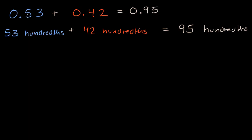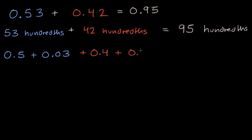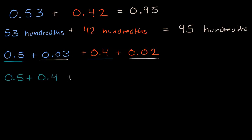Now another way we could have thought about it is we could have broken these numbers up. We could have said that this first number is five-tenths plus three-hundredths. And then the second number we could have rewritten as four-tenths plus two-hundredths. Then we could have separately added the tenths and the hundredths.